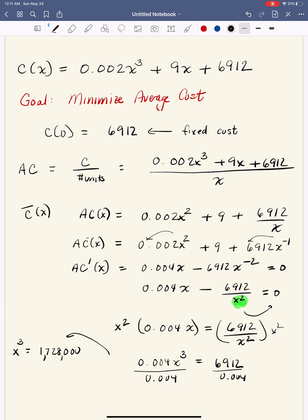this should give us X cubed equals 1,728,000. So to solve for X, we take the cube root of both sides. So X is equal to the cube root of 1,728,000, and that actually means 120 units.